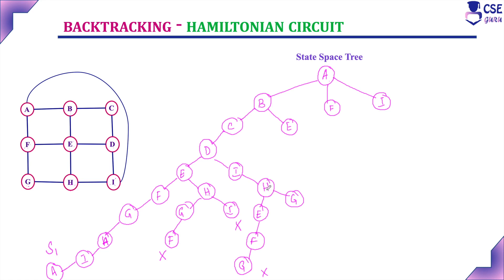Consider through the path H to G. From G, the unvisited vertex is F. From F, E is unvisited. But from E, you cannot return back to A. All the vertices in this path have been visited exactly only once, but from E you cannot return back to A. So this is a dead end.